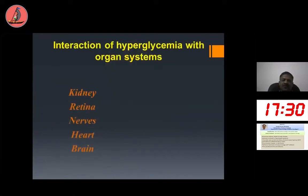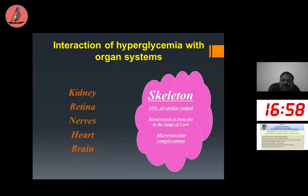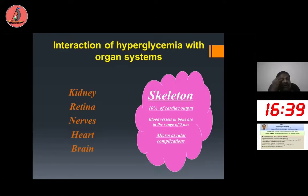Hyperglycemia affects every organ system of the body, whether microvascular or macrovascular complications. Similarly, the skeleton is also affected by hyperglycemia. It is interesting to note that approximately 10% of cardiac output goes to bone and skeleton. Bone can be considered a microvascular organ because vessel size in bone is around 5 micrometers. So beyond the classic triopathy — retinopathy, nephropathy, neuropathy — we may soon talk about tetrapathy, including osteopathy as a bone effect of hyperglycemia.